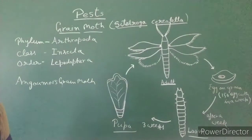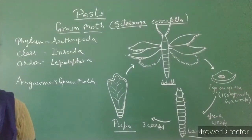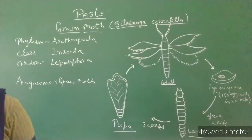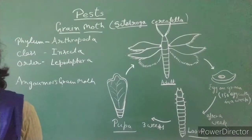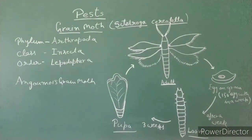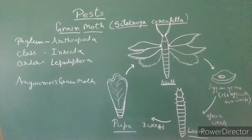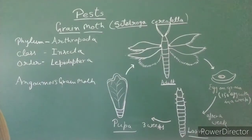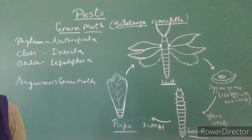High humidity and heavy moisture are very suitable conditions for these moths. This is why the monsoon period causes maximum damage. The infestation starts when the crops are in the field and the grains are in the milky stage. The larvae feed on the grains, making them hollow, reducing the economic value of the crop. Reports indicate up to 30% damage in the field.